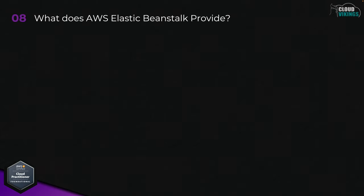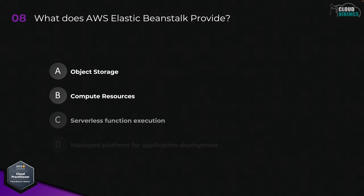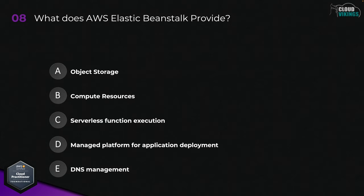Question eight: what does AWS Elastic Beanstalk provide? Options are: A, object storage; B, compute resources; C, serverless function execution; D, managed platform for application deployment; or E, DNS management. The correct answer here would be D, managed platform for application deployment.